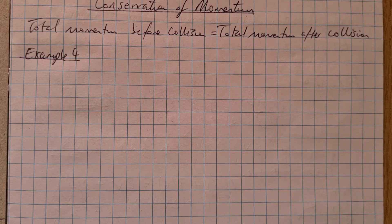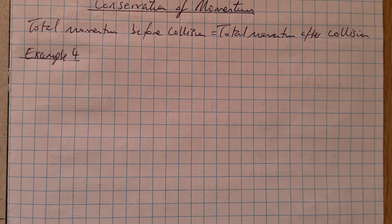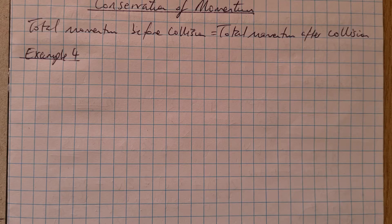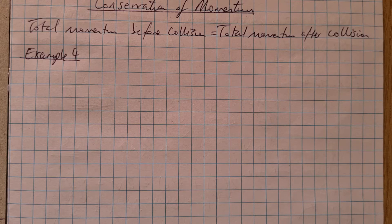If you know about Newton's third law, when two bodies collide, each one exerts an equal and opposite force on the other, as we discussed in the last example of the previous video. As they're in contact for the same time, they exert an impulse on each of equal magnitude but in opposite directions. Therefore, they cancel each other out and the momentum before will equal the total momentum after an impact.